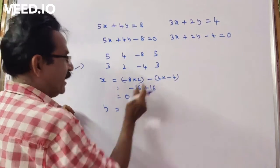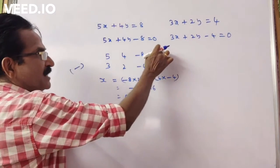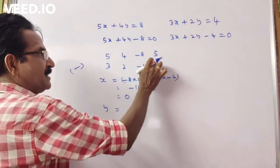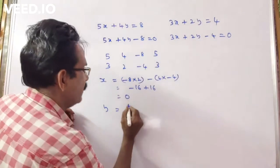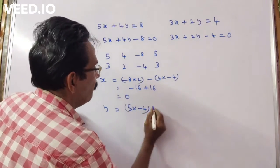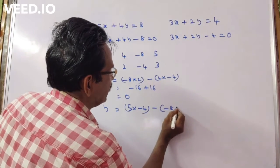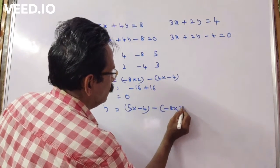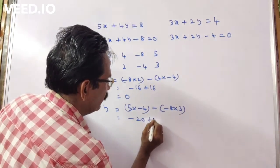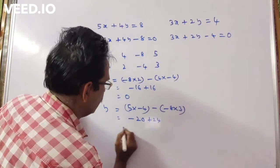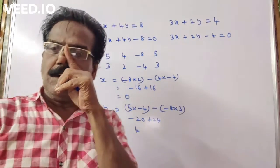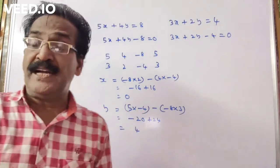And coming to the y value: this cross product minus this cross product gives 5 into minus 4 minus minus 8 into 3, which is minus 20 plus 24, equal to 4. So x is equal to 0 and y is equal to 4.